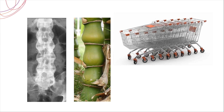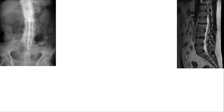If you take a baby bamboo and compare it with the vertebral appearance of an ankylosing spondylitis patient, it characteristically looks alike. Another way of describing the same picture is trolley track spine — trolley tracks commonly seen in shopping malls or airports — due to vertical syndesmophytes.